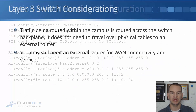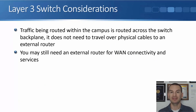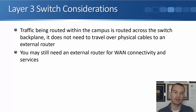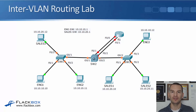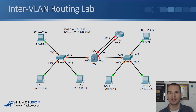So that is the configuration. Looking at the considerations: traffic being routed within the campus is now routed across the switch backplane. It doesn't need to travel up and down physical cables to an external router like with the first two options. But as mentioned, you might still need an external router for WAN connectivity and services. Next up is to configure it in the lab, which I'll do in the next lecture.